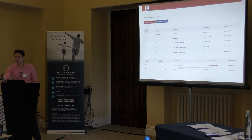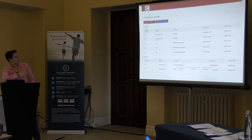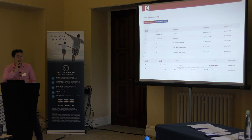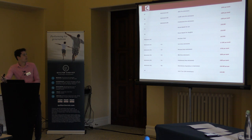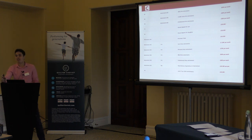Now we've actually got some incomes and expenses affecting it. Running through it: we've got their salaries, a DB pension kicking in at retirement age of 65, and their state pensions. We've also got expenditures — quite a lot of them, which is probably looking a bit daunting. As a paraplanner, you're thinking you're going to be the one to put all this data in, and data entry is probably my least favourite part of the job.